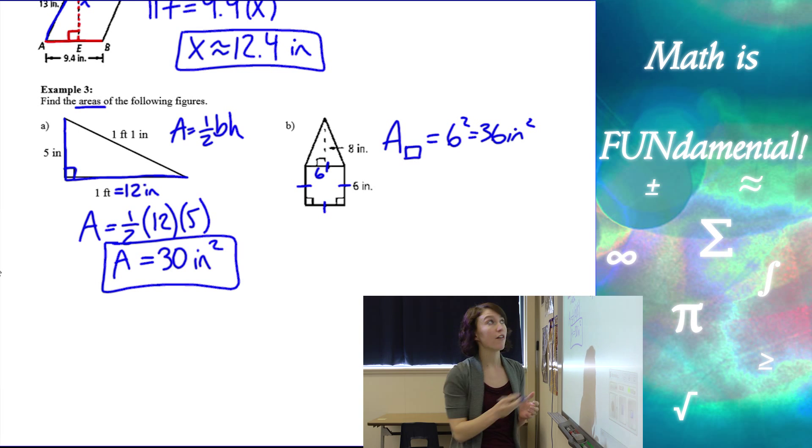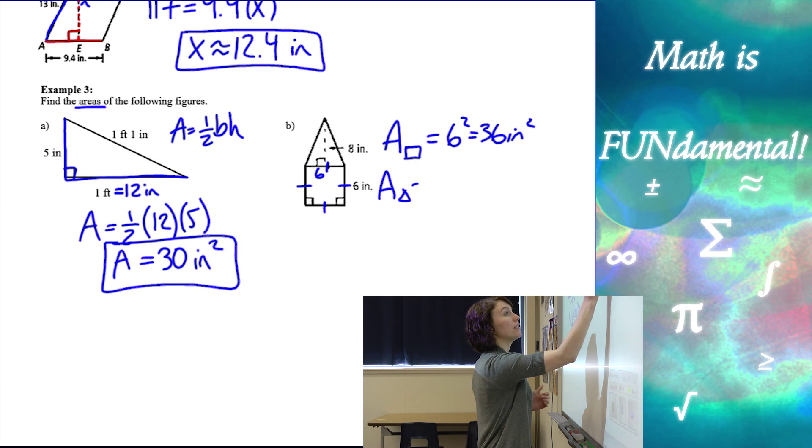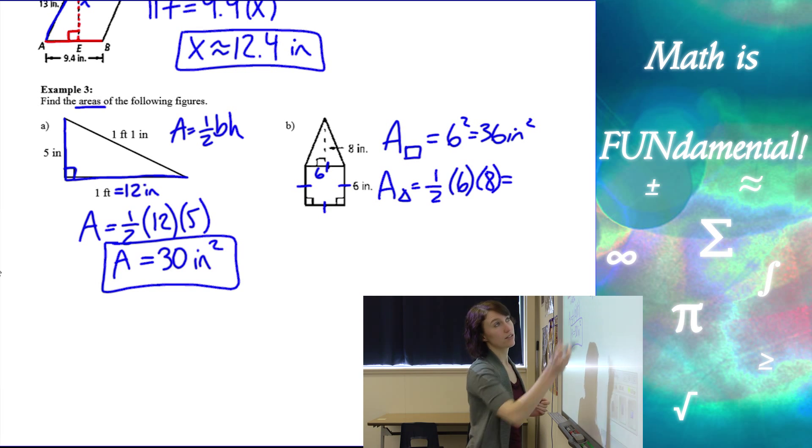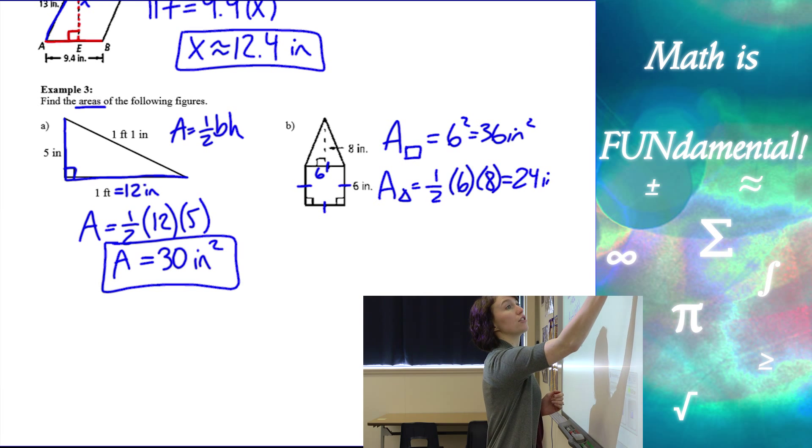And then the area of my triangle is going to be one half base length, which is six times the height, which is eight. And that's going to be 24 inches squared.